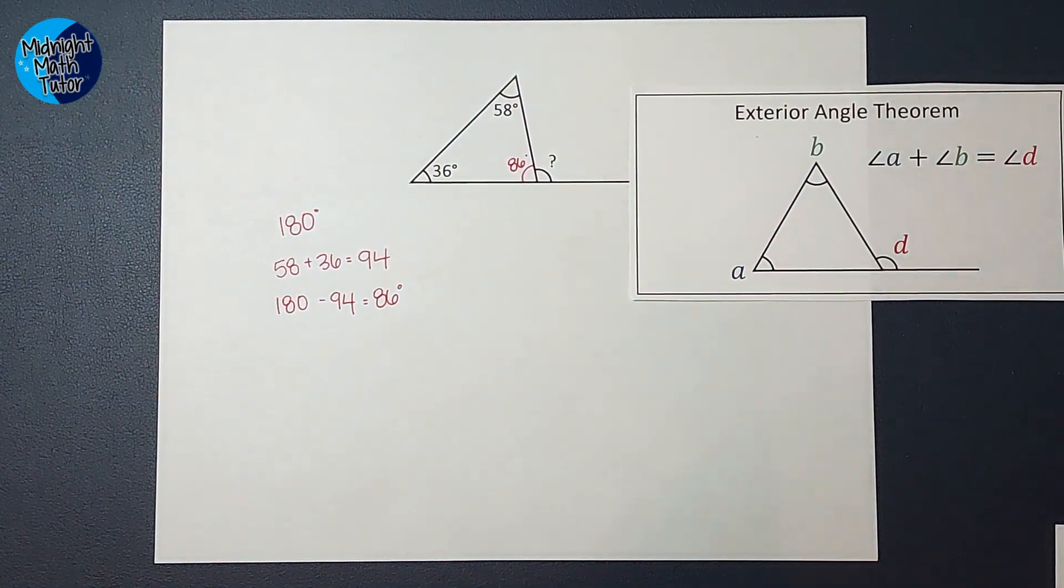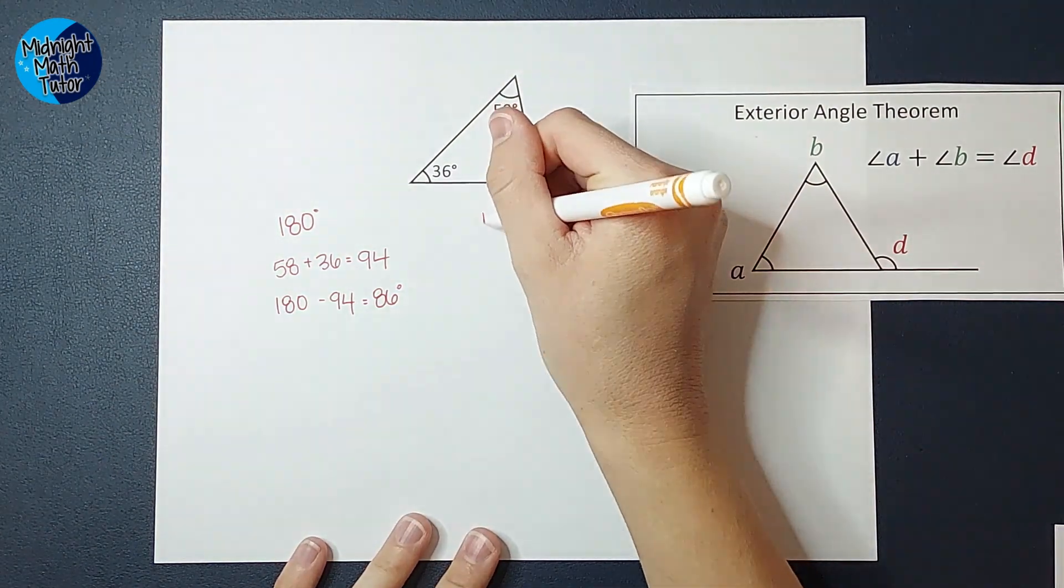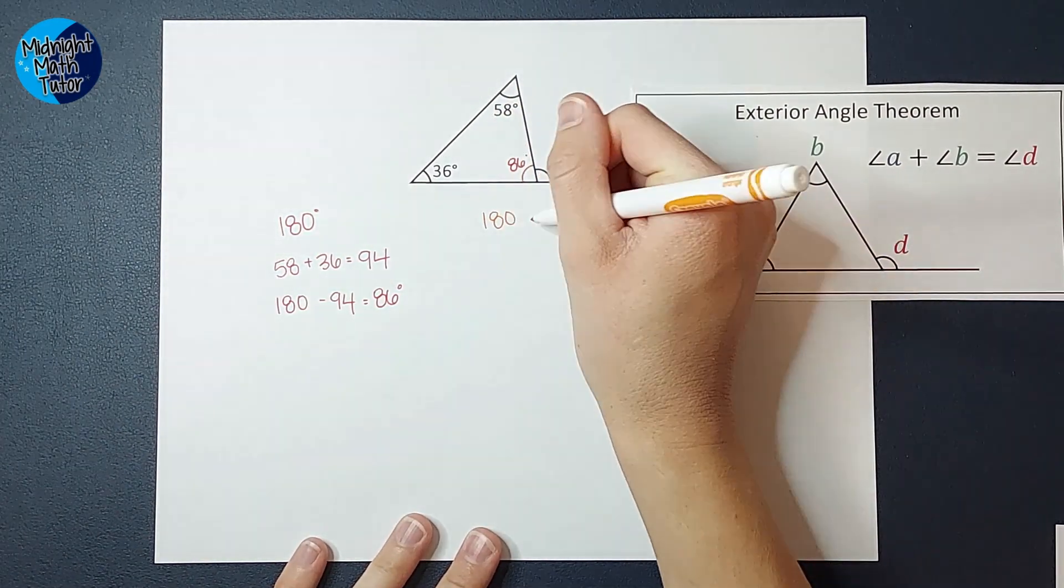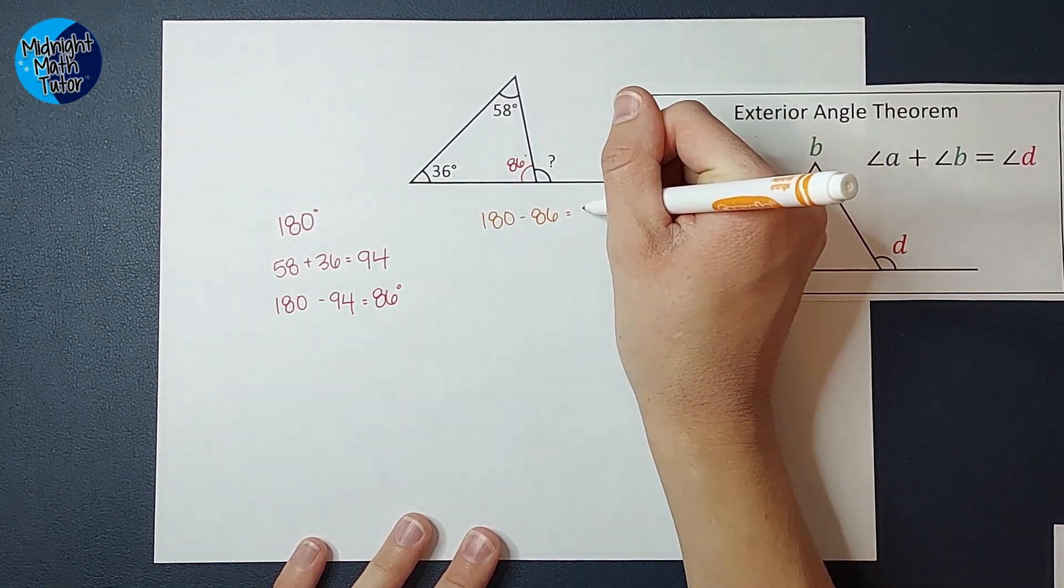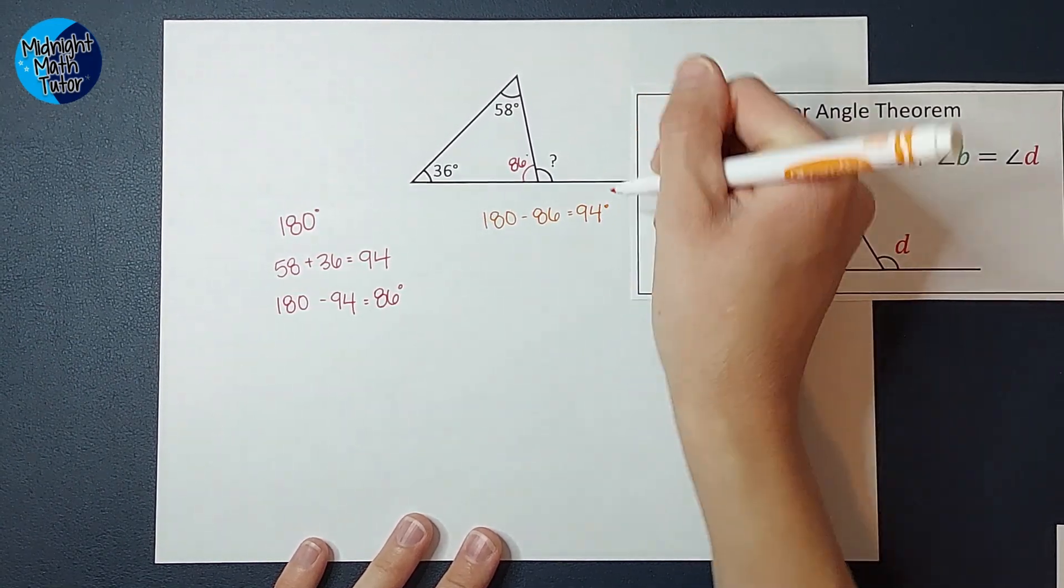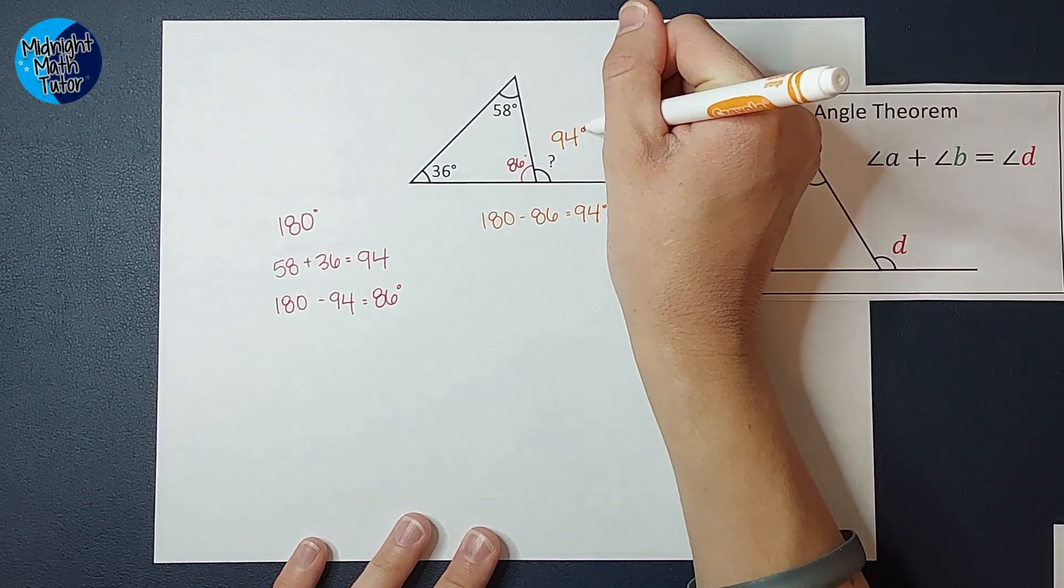So if I were trying to figure out what this angle were, I would take 180 and subtract 86. And what would that give me? That would give me 94. So this is 94 degrees.